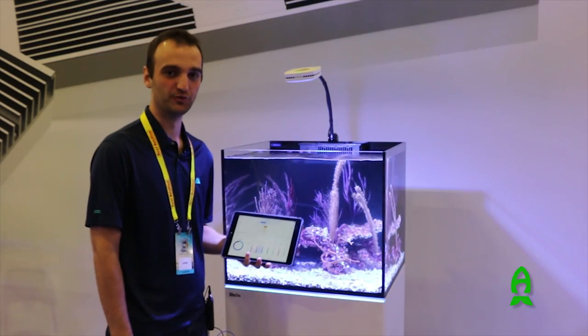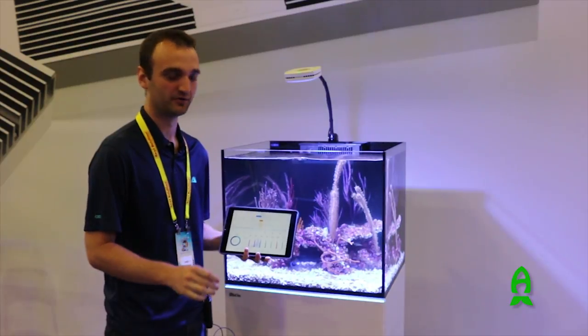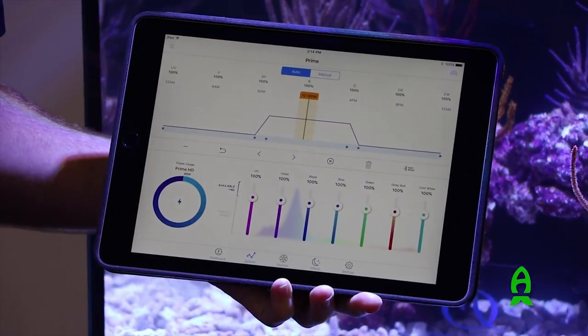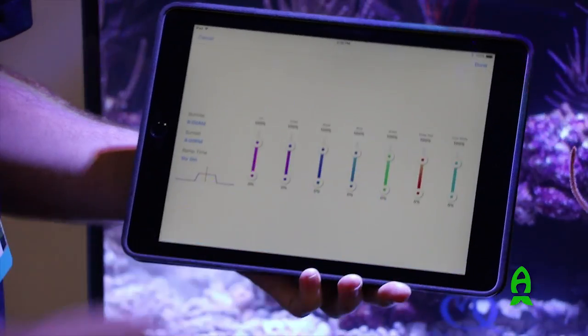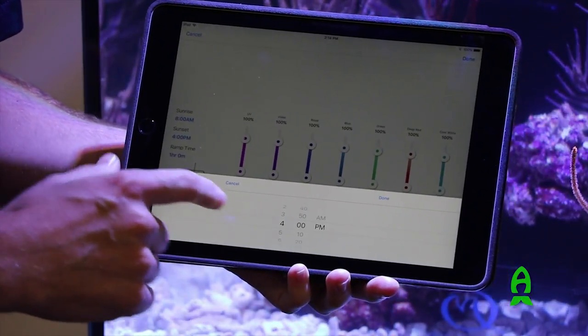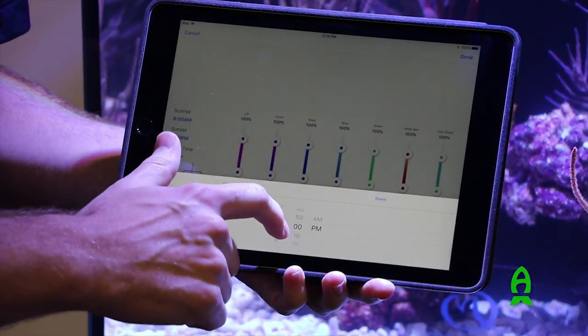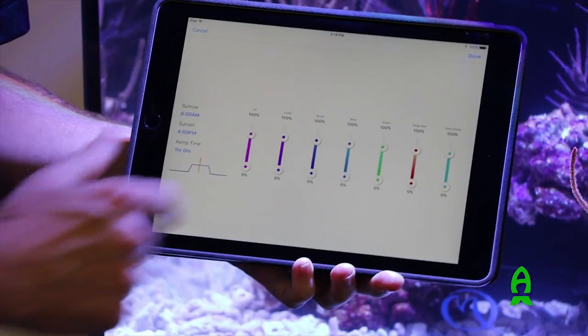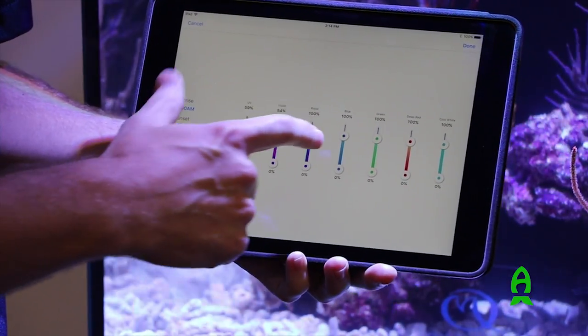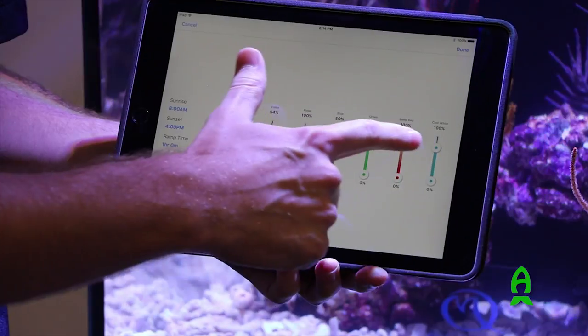Creating a schedule with the new Prime HD is incredibly simple. On the schedule page, you just go to Easy Setup here, and you're going to choose your sunrise and your sunset time. We'll go ahead and set that to, say, 4 o'clock. And then you're going to set the daytime and the nighttime intensity for each LED color.